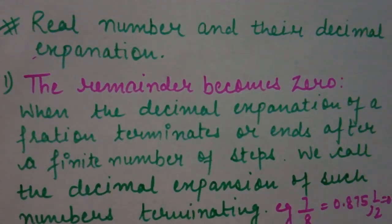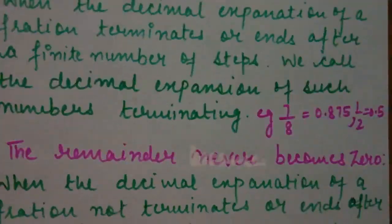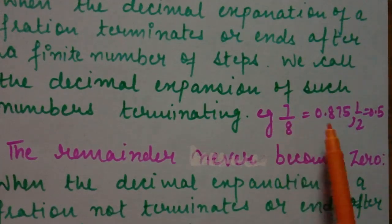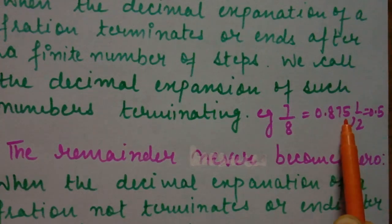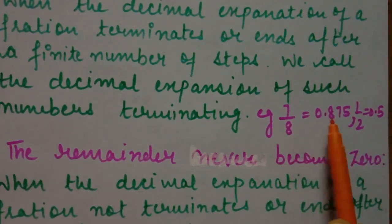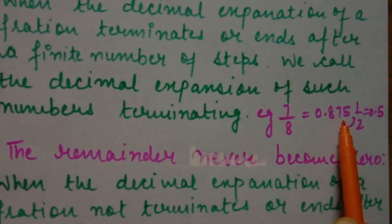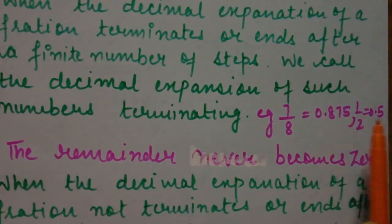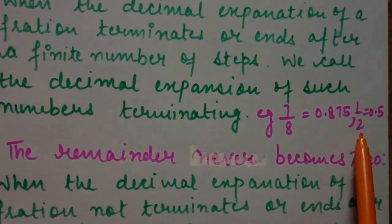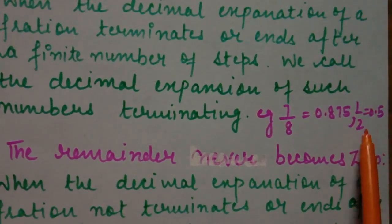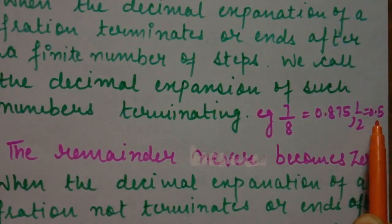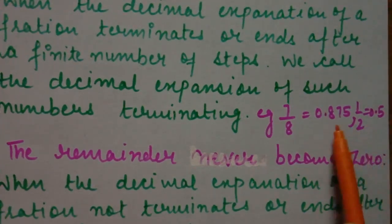Example: 7 upon 8. When we divide 7 by 8, we get the answer 0.875 — the division process ends after three definite steps. Another example: 1 upon 2 gives 0.5, ending after one step. These types of numbers we call terminating.